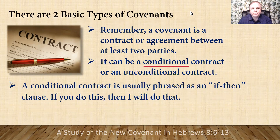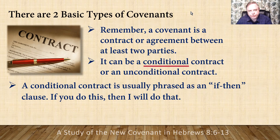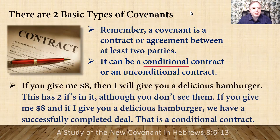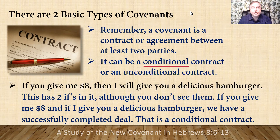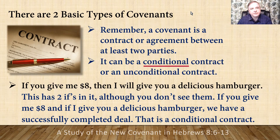A conditional contract is usually phrased as an if-then clause: if you do this, then I will do that. Here's an example: if you give me eight dollars, then I'll give you a delicious hamburger. This has two ifs in it, although you don't see them — if you give me eight dollars, and if I give you a delicious hamburger, we have a successfully completed deal. That is a conditional contract.